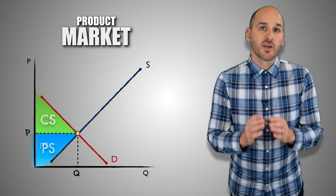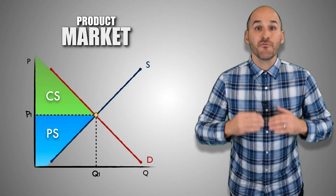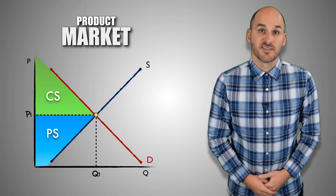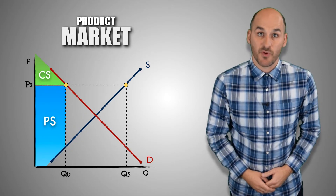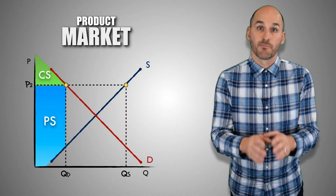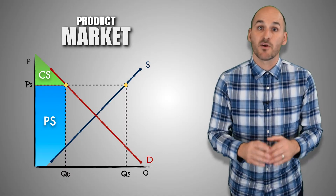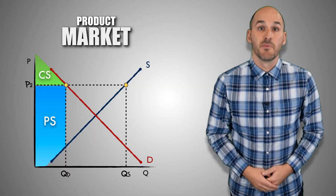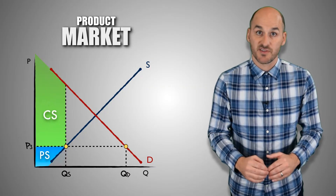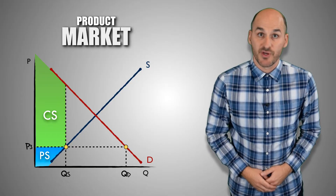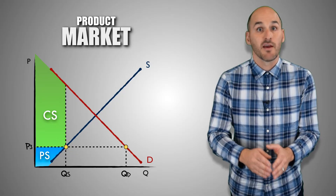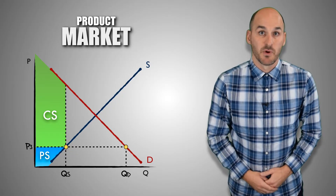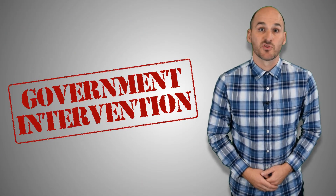However, when government intervention is used in the market, it artificially alters price and quantity and will lead to disequilibrium. If price level increases, consumer surplus will decrease and producer surplus will increase, as the product price is closer to the buyer's maximum price and further away from the seller's minimum price. If price level decreases, consumer surplus will increase and producer surplus will decrease, as the product price is closer to the seller's minimum price and further away from the buyer's maximum price. Let's take a look at how intervention in the market will impact consumer and producer surplus.